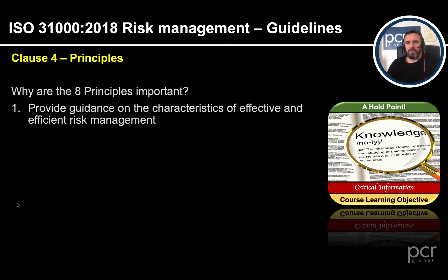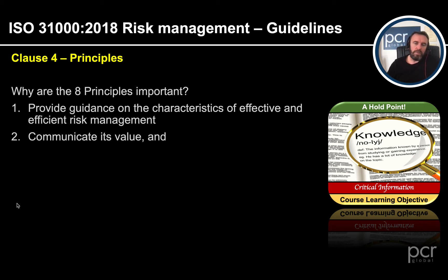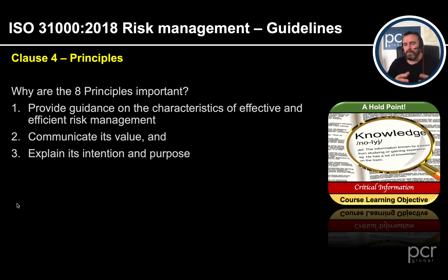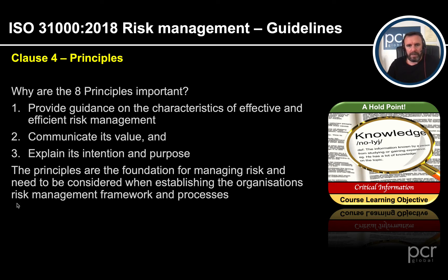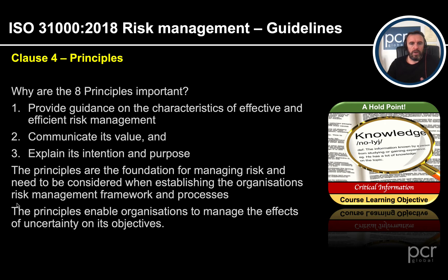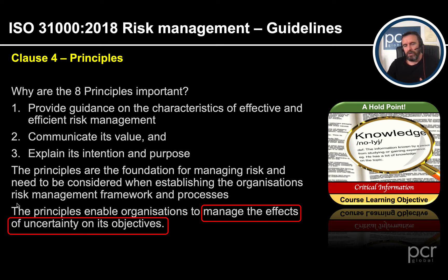I spend a fair amount of time talking about the principles. It's really important — because they provide the guidance and the characteristics of effective and efficient risk management. That is the guidance provided within ISO 31000. They communicate the value of risk management, but they also explain the intention and purpose of ISO 31000. The principles are the foundation and they enable organizations to manage the effects of uncertainty on their objectives, which is the definition of risk as per this standard.